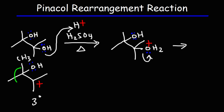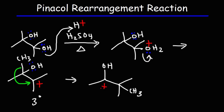This methyl group is going to move towards the carbocation. This carbon lost the bond, so it's going to have a positive charge. Notice that we have a secondary carbocation, which may appear to be less stable than the tertiary carbocation. However, this secondary carbocation is going to be stabilized by resonance — the oxygen with the lone pair can take that lone pair, use it to form a pi bond, converting it into a protonated ketone.